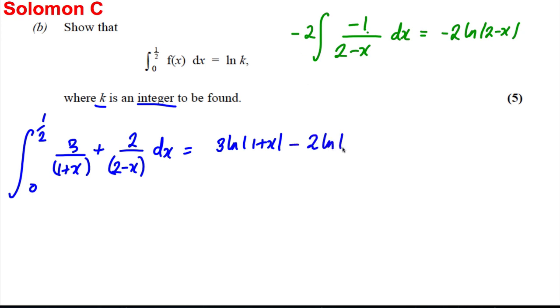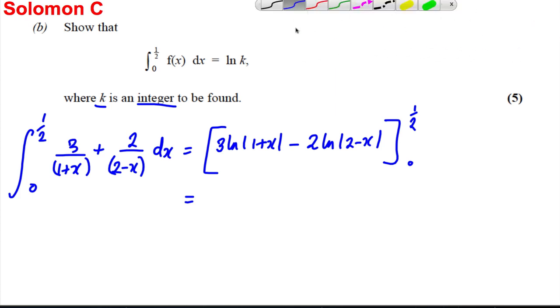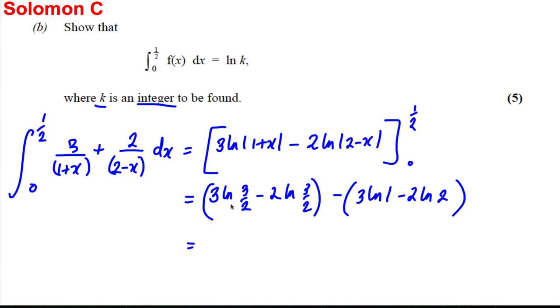So therefore, we've got 3 ln mod 1 plus x subtract 2 ln mod 2 subtract x. Big square brackets around it, between a half and 0. Put a half in and we get 3 ln 1 plus a half is 3 over 2, and then subtract 2 times ln of 2 minus a half is 3 over 2 again. And take off the answer when you put 0 in. So we get 3 ln 1 minus 2 ln 2. Well, 3 ln 3 over 2 take away 2 ln 3 over 2 is 1 ln 3 over 2. We know that ln 1 is equal to 0. So we've got ourselves subtract negative 2 ln 2, which is plus 2 ln 2.